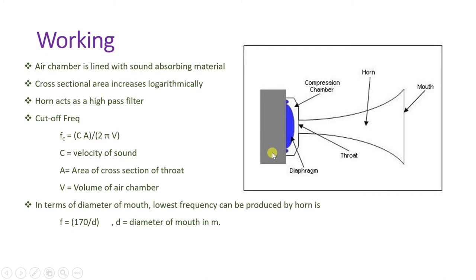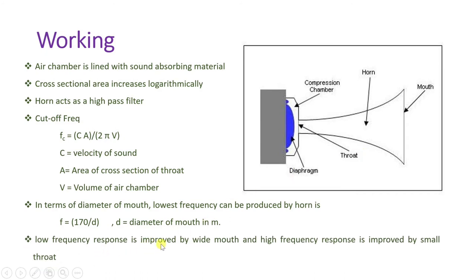In terms of diameter of mouth, the lowest frequency produced by horn is 170/D, where D is the diameter of the mouth. Low frequency response is improved by the mouth, and high frequency response is improved by the small throat. The resultant frequency response is far better by horn compared to cone type loudspeaker.